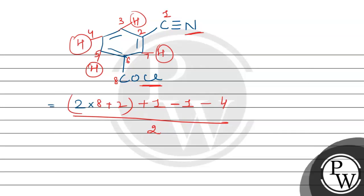So 2 multiplied by 8 is 16. 16 plus 2 is 18. Plus 1 minus 1 cancel out. Minus 4 divided by 2. So it is 18 minus 4 is 14 divided by 2, which means 7. So degree of unsaturation is 7.